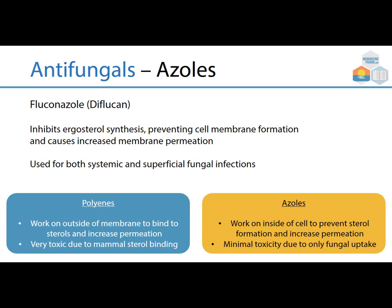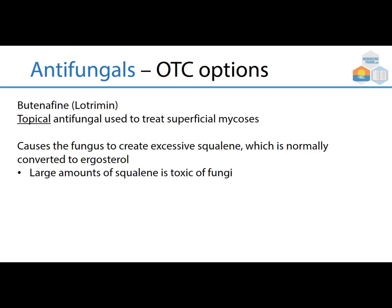The big difference between the two: polyenes work on the outside of the membrane to bind sterols and increase permeation, and they're really toxic because they bind to the mammalian sterol cholesterol. Azoles work on the inside of the cell to prevent sterol formation and increase permeation, and they're minimally toxic because only the fungi uptake them. An over-the-counter option is butenafine, which is Lotrimin — a topical antifungal used to treat superficial mycoses.